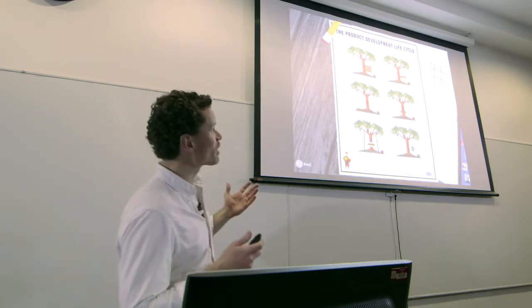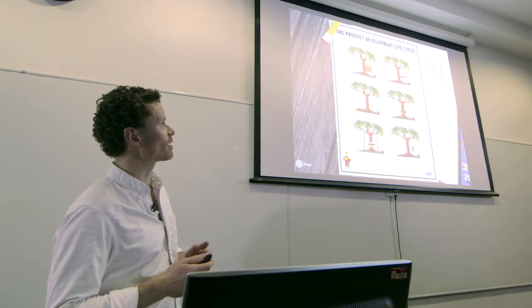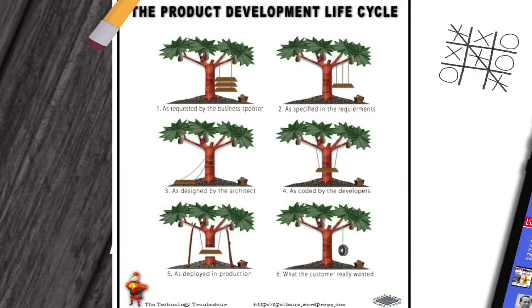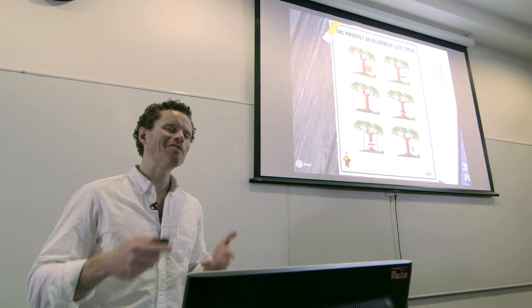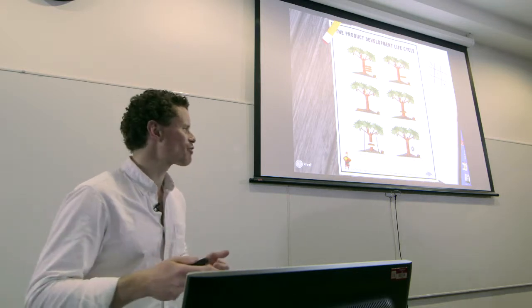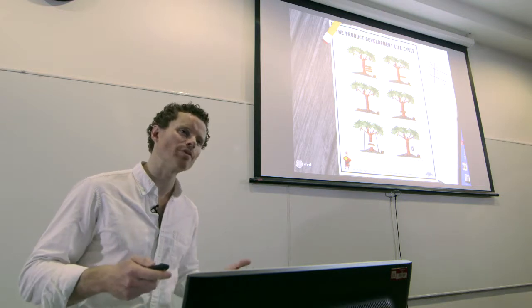Anyone who's been involved in software development will recognise this particular cartoon. You start up there in the top left with the business sponsor putting together what they have requested. But by the time you've turned it into specifications and requirements, it's already changed. Then once you get architects and developers involved, it changes again. So by the time you actually deploy it or roll it out, it's changed dramatically from how you originally designed it. The chances are you're rolling out lots of fixes and patches along with it. And of course, ultimately, when you present it to the customer, it's vastly different from what they asked for in the first place. So why does this happen so often?